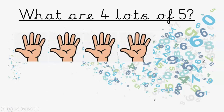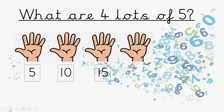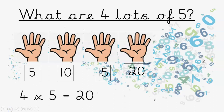What are four lots of five? There's my four lots of five. Do you know before it comes up? Five, ten, fifteen, twenty. What's our times table? Pause the video and write it down. That's right — it's four times five is twenty. Great job.